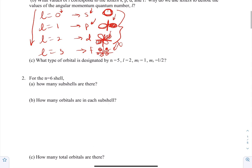Letter C: what type of orbital is designated by n=5, l=2, M sub L=1, and M sub S=+½? Since we're talking about orbitals, we don't even need M sub S. N=5 means it's in the fifth period, so it's a 5-something orbital. L=2 is a d orbital, so the answer is a 5d orbital.